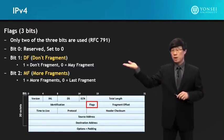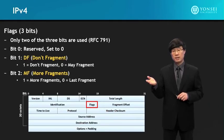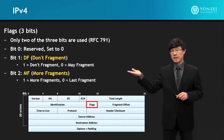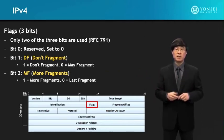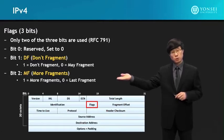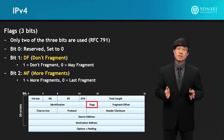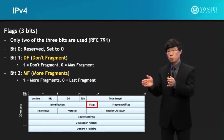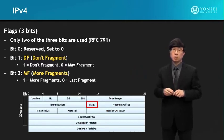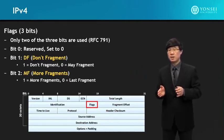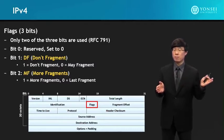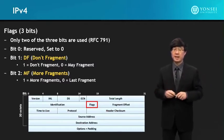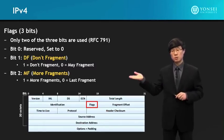Bit 01 is the 'don't fragment' flag — if set to 1, do not fragment this IP packet; if set to 0, fragmentation is allowed if needed. Bit 2 is the 'more fragments' flag — if a packet is fragmented, the preceding part has this bit set to 1 to indicate that a following fragment part is going to come after this packet.